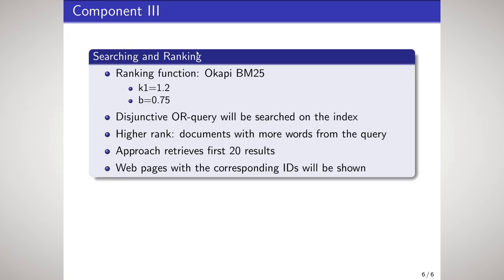The last component is responsible for searching and ranking. I am using the ranking function Okapi BM25 with the values K1 set to 1.2 and B set to 0.75, and then using disjunctive OR queries to search on the index. These disjunctive OR queries have been created from the provided topics, and documents containing more words from the query will be ranked higher. The approach retrieves the first 20 results, and web pages with the corresponding ClueWeb IDs will be shown to the user.